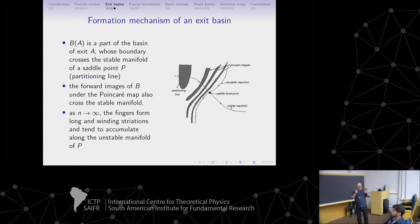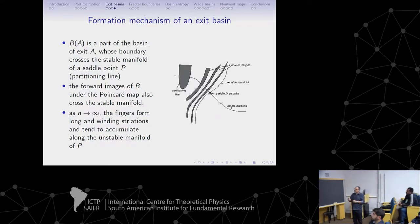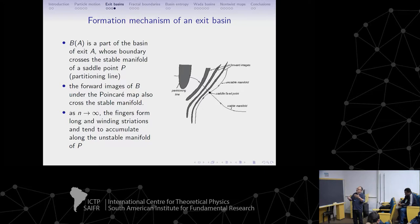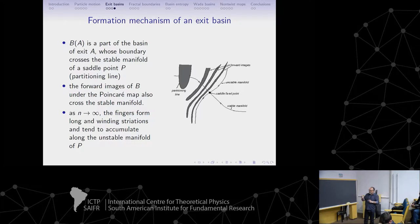What do those invariant manifolds have to do with the exit basins? It is this formation mechanism: if we consider a partitioning line on a part of an exit basin, as we evolve the map, successive images of this line turn into spaghetti-like striations that accumulate in the unstable manifold. That's why the exit basins have those incursive fingers — essentially the forward images of a partitioning line, provided this partitioning line intersects the stable manifold, which is a necessary condition.